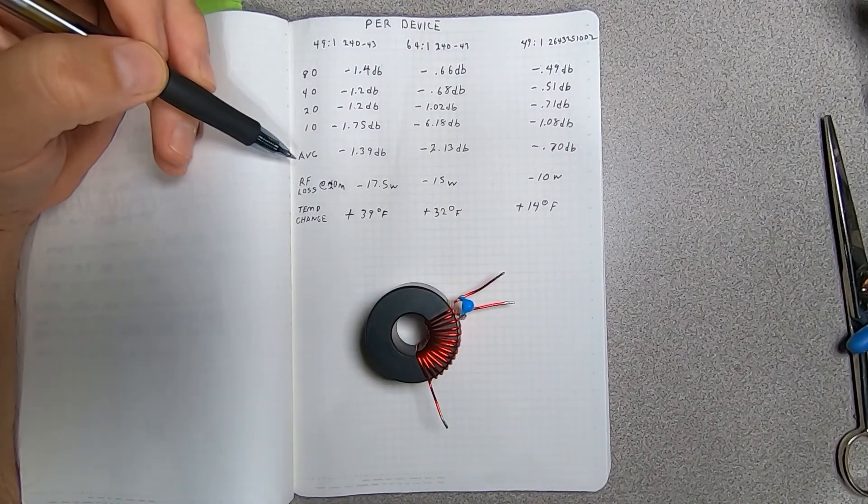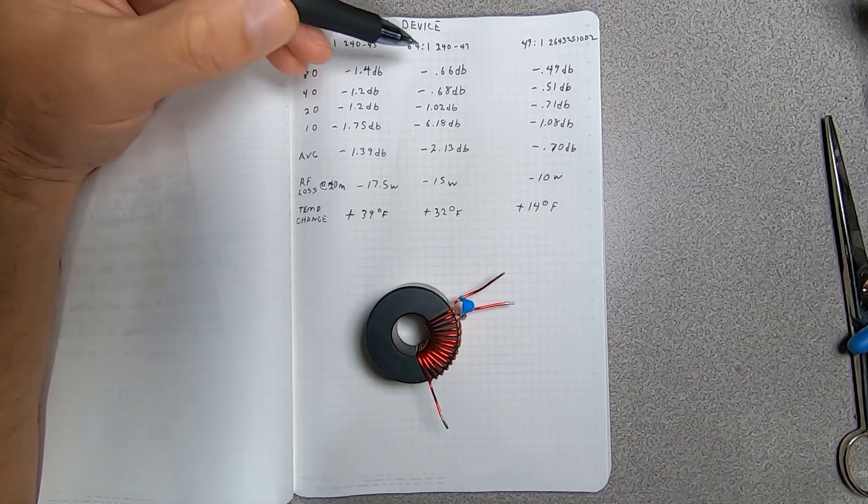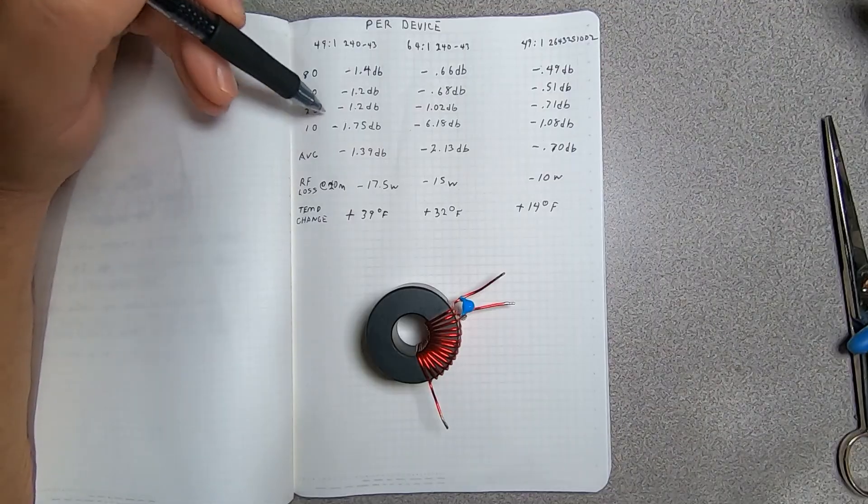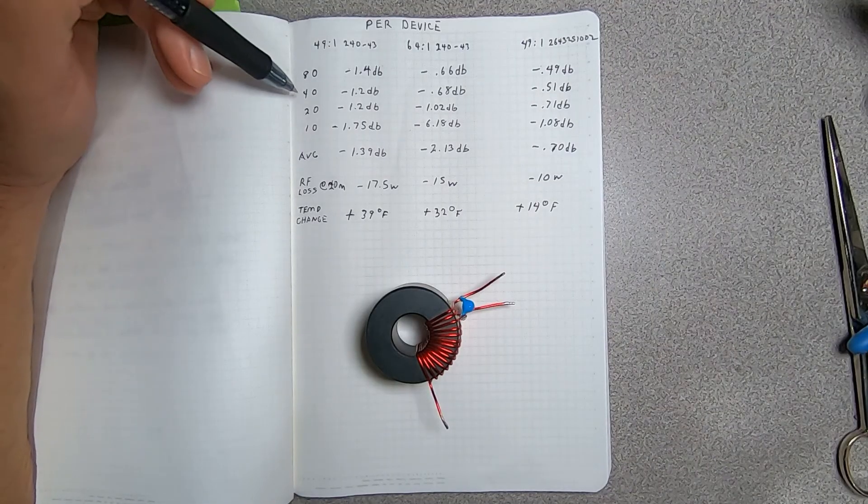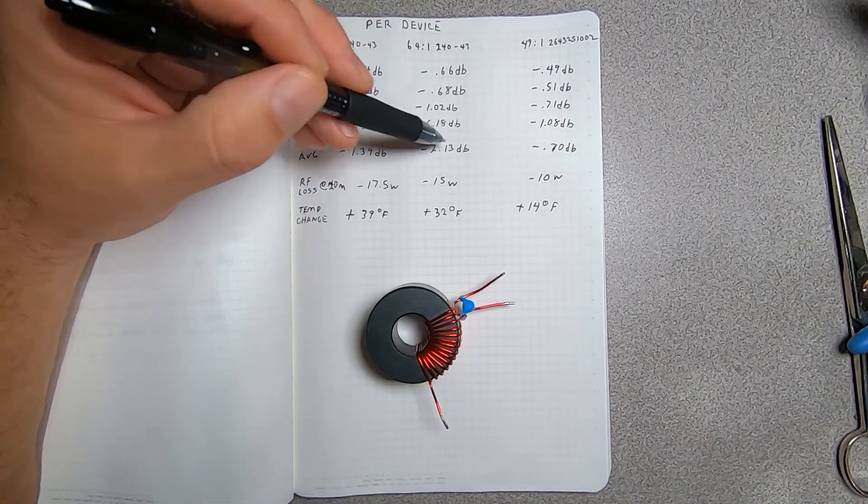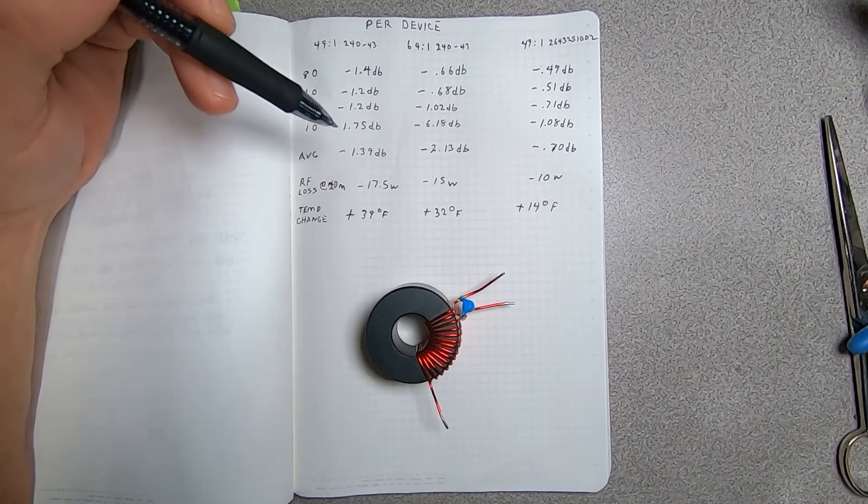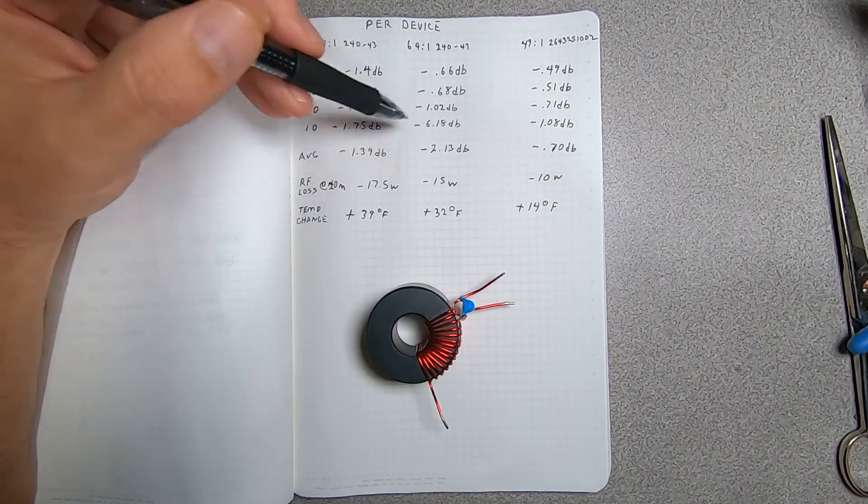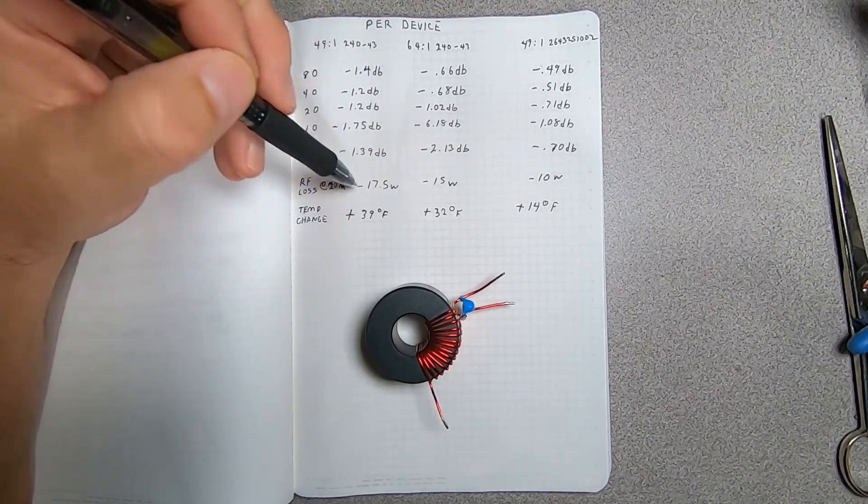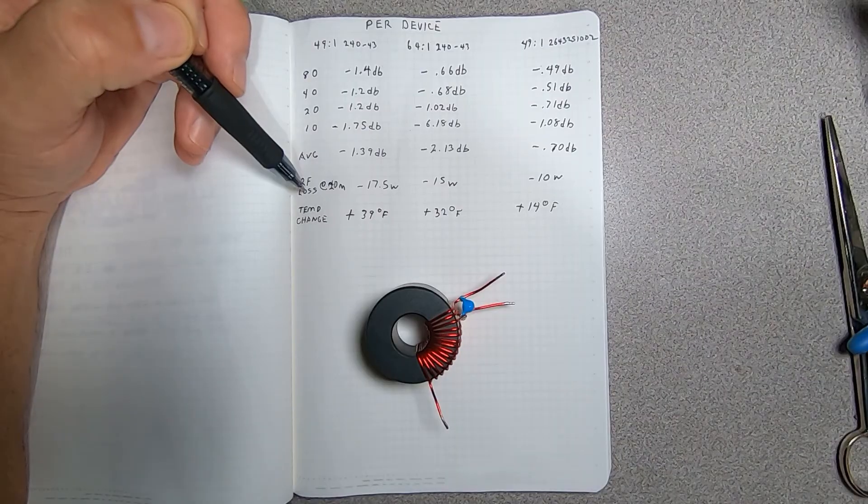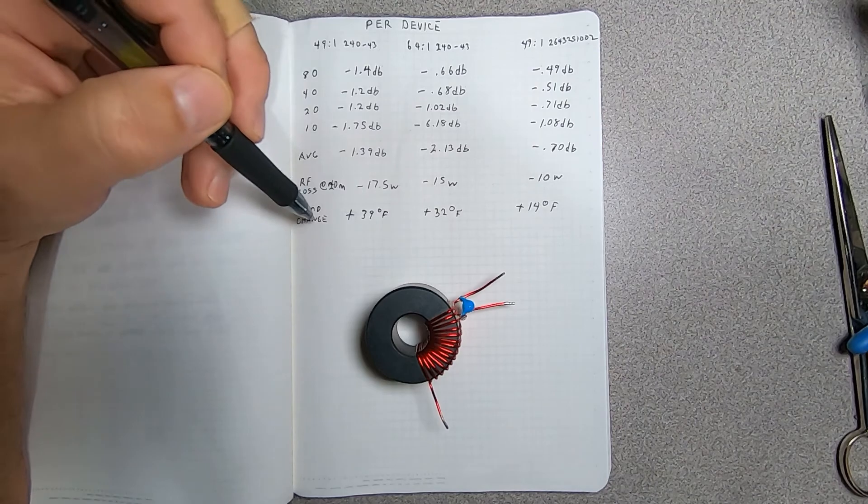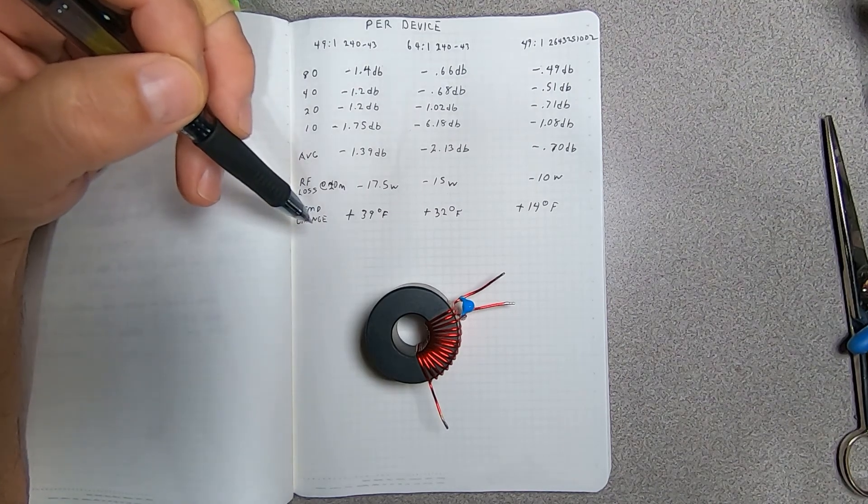And here's all the results written out here for you. The different devices are here, and this is the losses per device that was measured with the spectrum analyzer and the different bands measured. And then I averaged it. Of course, of the 64 to 1, if you took that 10 meter one out of there, its performance wouldn't be nearly as bad. But again, that transformer does not perform very well at high frequencies. This is the amount of RF loss per device observed at 20 meters. And you can see that here. And then the amount of temperature change in the transformers after that two-minute key down.